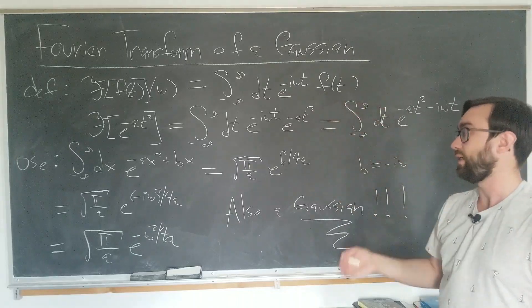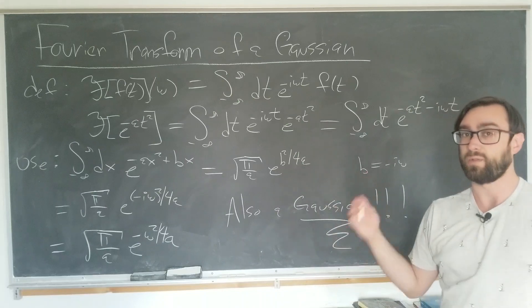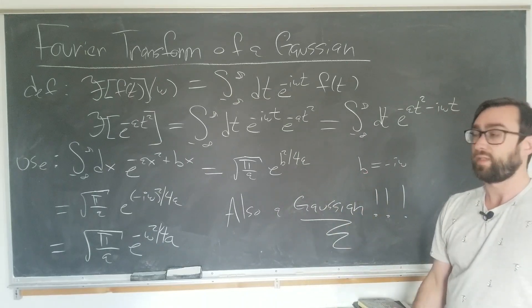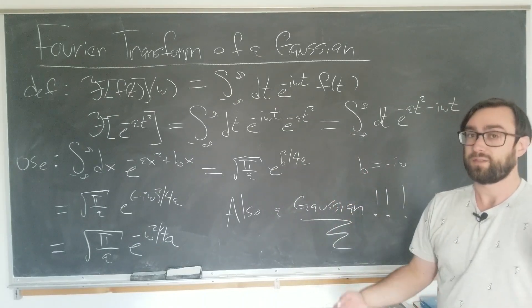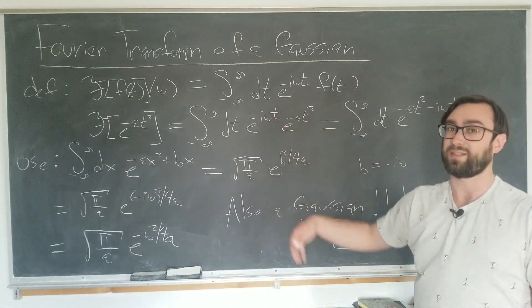Fourier transform of a Gaussian is a Gaussian. Important property of Fourier transforms, I think, is cool. Make sure to show your friends this at parties. Be like, oh, did you know Fourier transform of a Gaussian is a Gaussian? No? Well, I'll show you in like three lines. Pretty cool.